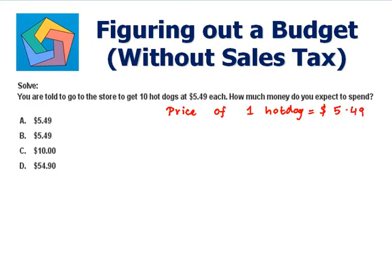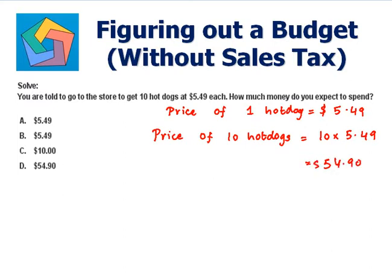What is the price of 10 hot dogs? We will multiply the price of one hot dog by 10 in order to get the price of 10 hot dogs. So the price of 10 hot dogs equals 10 times $5.49, that's $54.90 — 54 dollars and 90 cents — which is the answer in part D. We can highlight it.